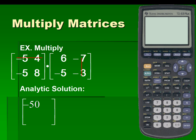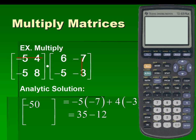Next, we will sum the product of elements of matrix 1, row 1, and matrix 2, column 2, for a result of 23.